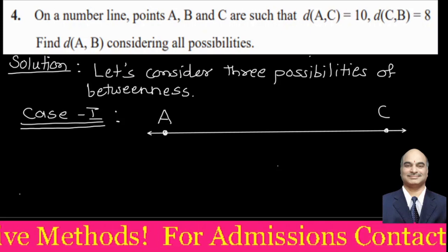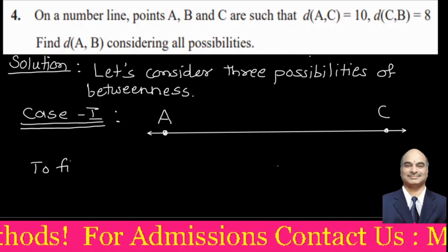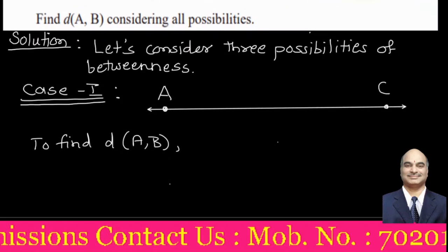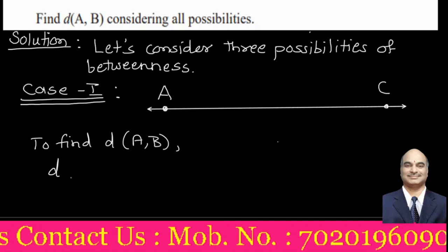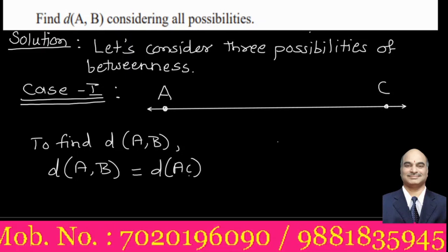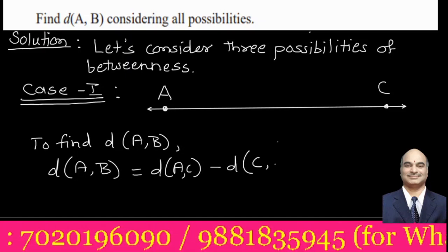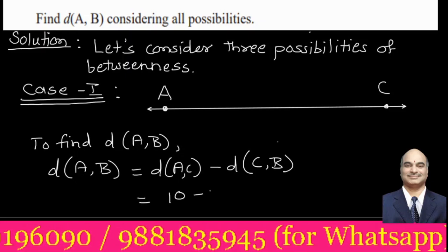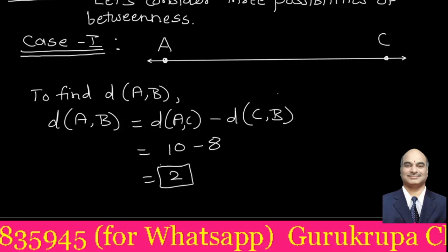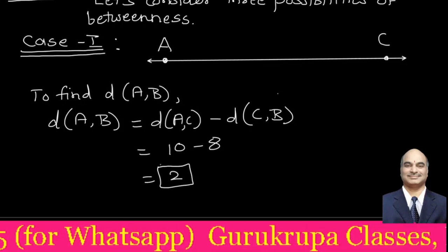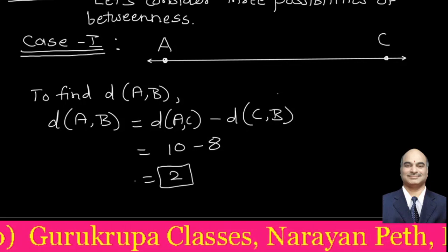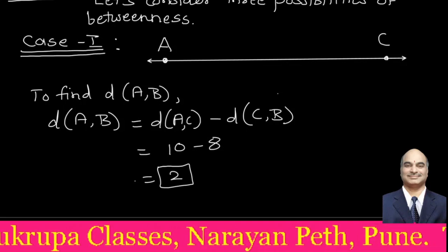To find distance AB: distance AB equals distance AC minus distance CB, that is 10 minus 8 equals 2. This assumes point B lies between A and C.